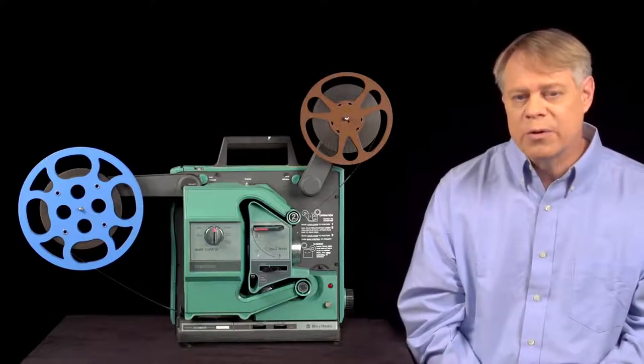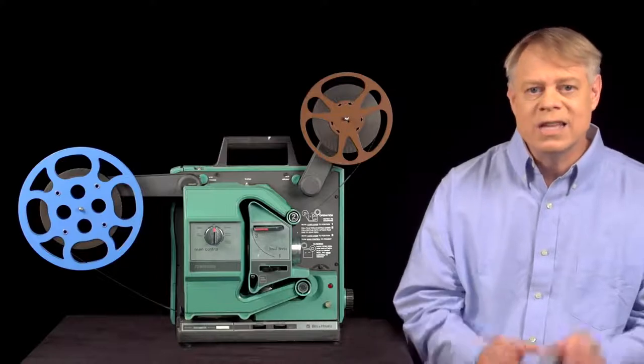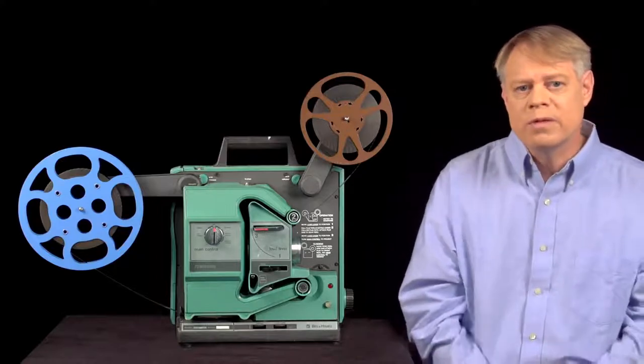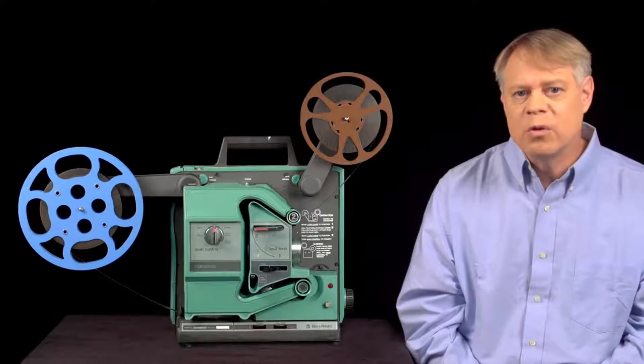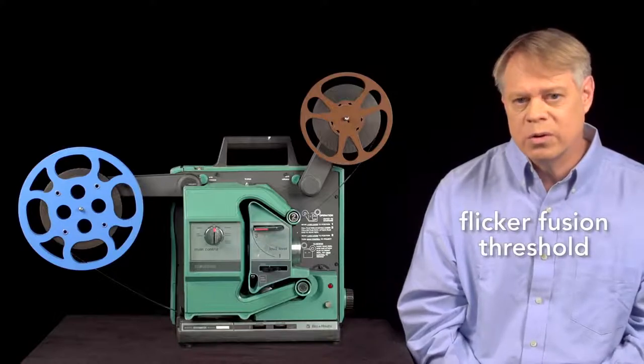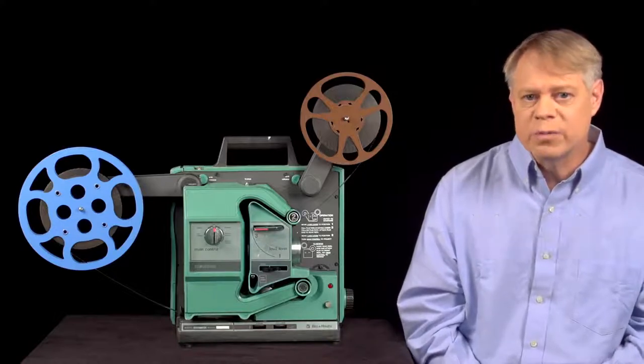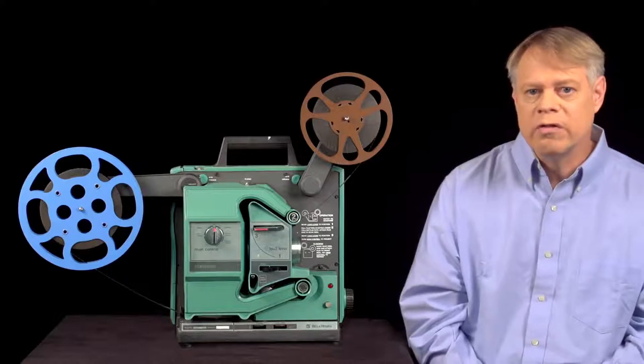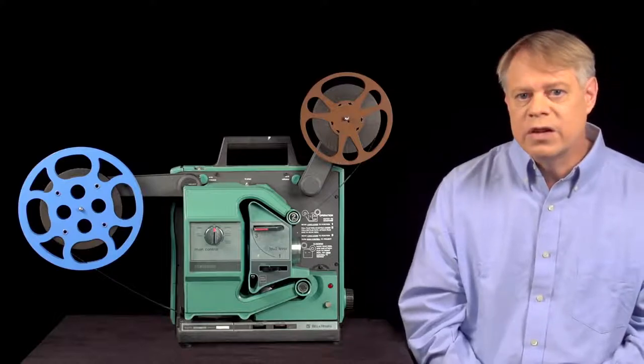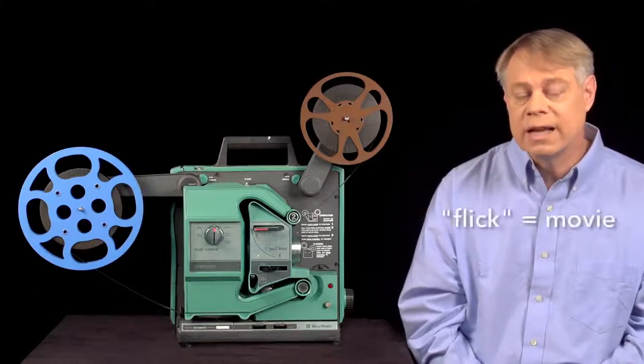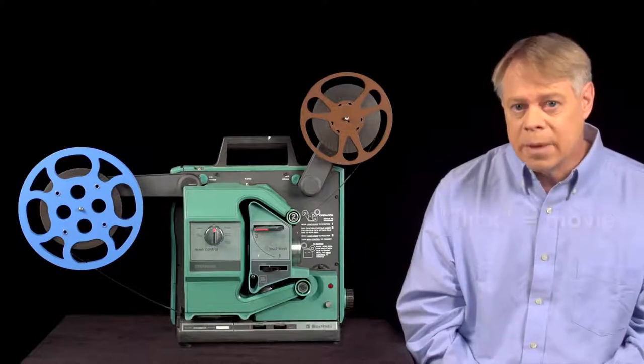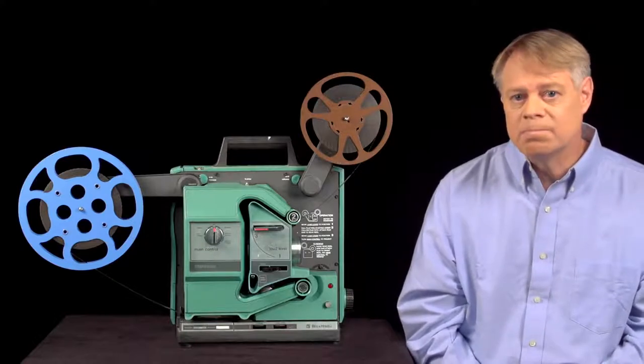This rate is called the flicker fusion threshold. Since 24 flickers per second is below the threshold, the flicker is visible. This flicker is the origin of the term flick as slang for movies. But modern film projectors don't have this problem. How did they fix it?